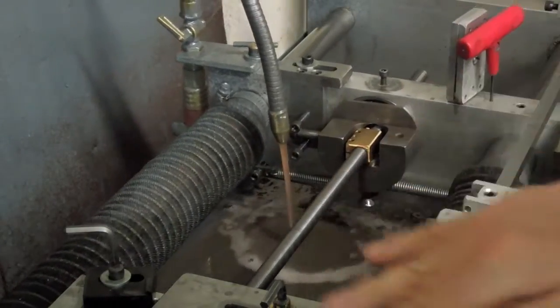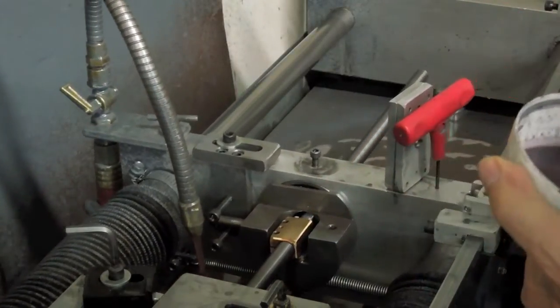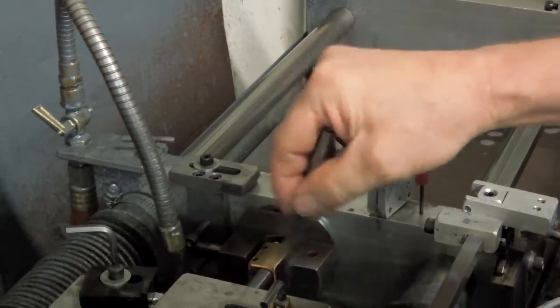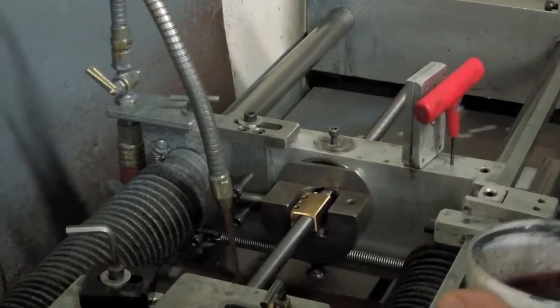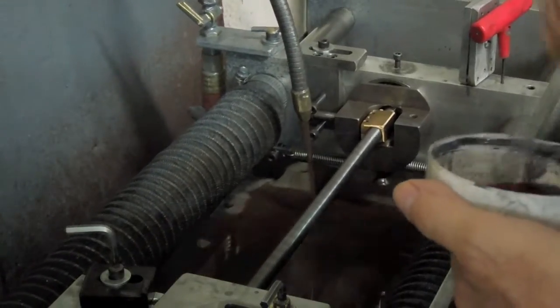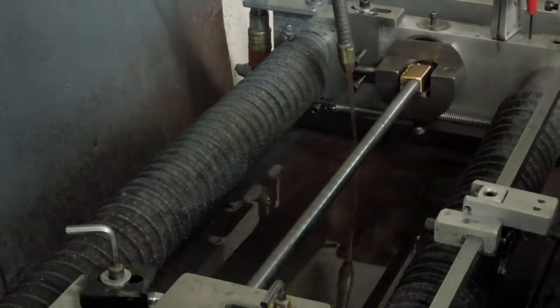We're going to make sure that the nut runs up and down. We have here some lapping compound. On the way down, we put the lapping compound on. This is 600 grit.